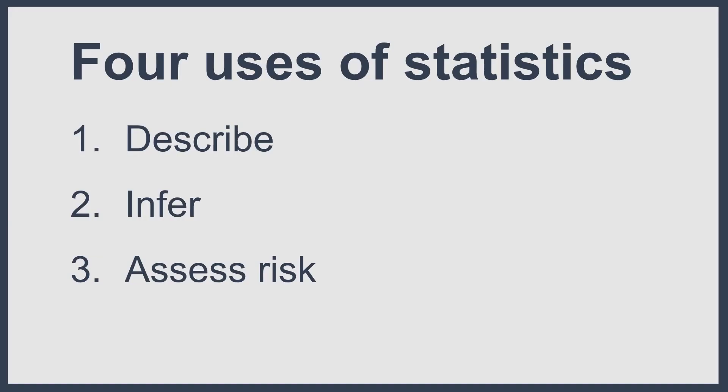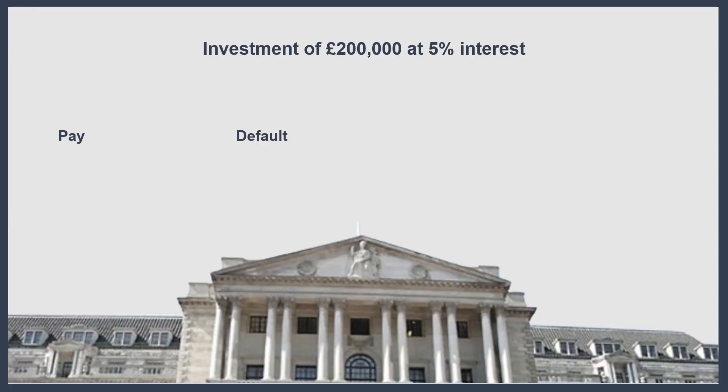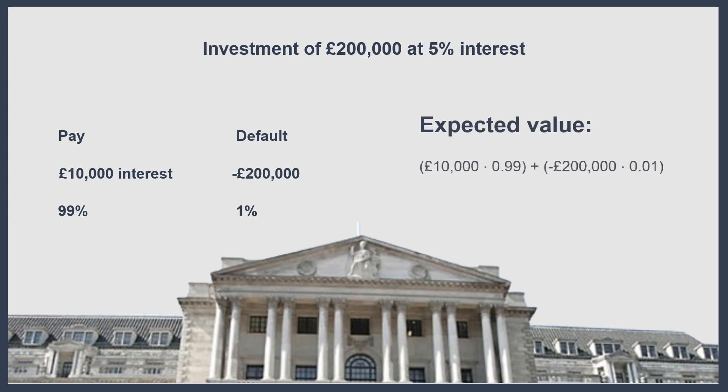A third thing statistics can do is help us assess risk. Some people think of statistics as just dull equations, but it's the best tool we have to deal with uncertainty. If you're a bank giving loans, some people won't pay you back and you don't know who. But if you can find out how much you'd make with each outcome — paying back or defaulting — and the probability of both, you can calculate the expected value and know whether it's a good idea to lend the money.